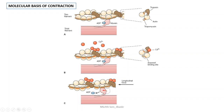Troponin I is the subunit which mediates the interaction between tropomyosin and actin, and it prevents the interaction of the myosin head with the actin molecules. In the relaxed state — also called the cocked state — the myosin binding site on the actin is covered by tropomyosin, so tropomyosin is blocking the myosin binding site on the actin.